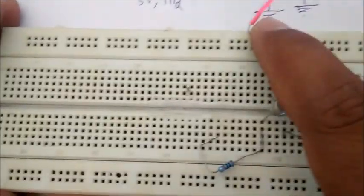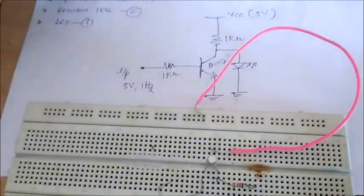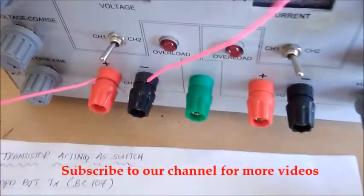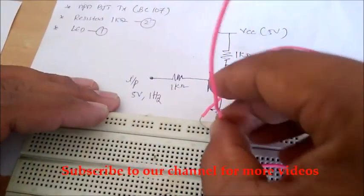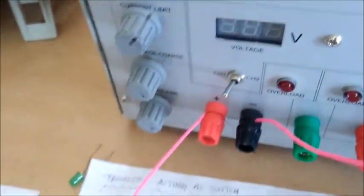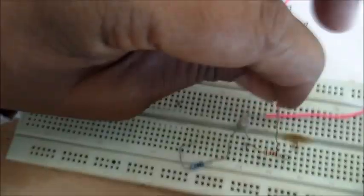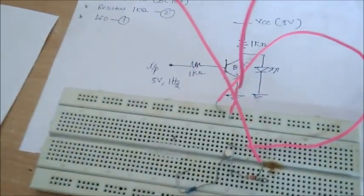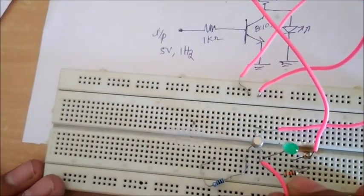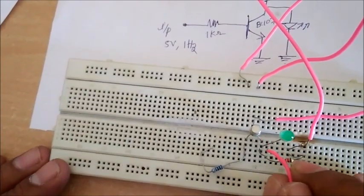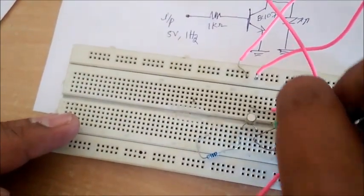Now connect the emitter to ground. Take the power supply and connect the ground of the power supply to ground, and the positive supply to the collector. Now connect the LED to the collector and the other end to ground.